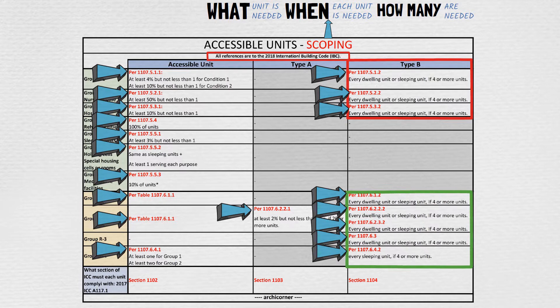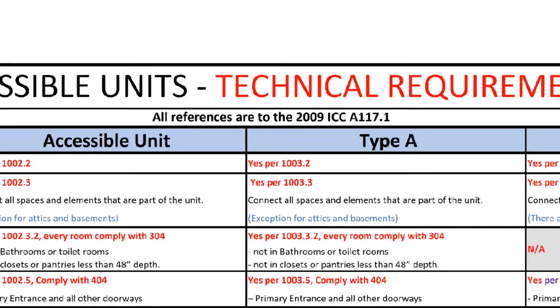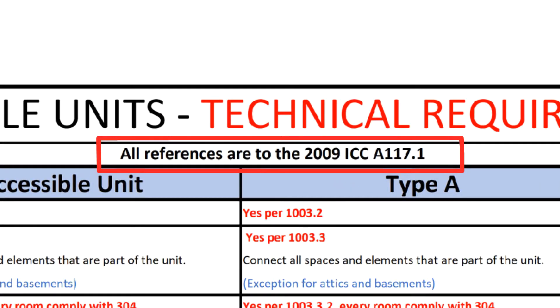Last but not least, there are specific sections that each unit needs to meet to be considered compliant with their respective accessibility requirements. Now that you know where to look for what type of units are needed, when they are needed, and how many are needed, let's move on to the technical requirements. For this, take a look at another table. All the technical requirements are described not in the IBC, but in ICC A117.1.